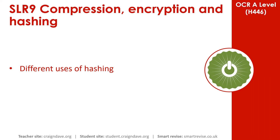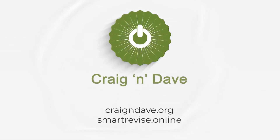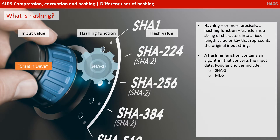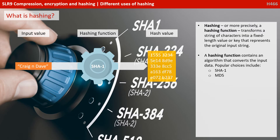We take a look at the different uses of hashing. Hashing, or more precisely a hashing function, transforms a string of characters into a fixed-length value or key that represents the original input string. A hashing function contains an algorithm that converts the inputted data. Popular hashing algorithms include SHA1 and MD5.